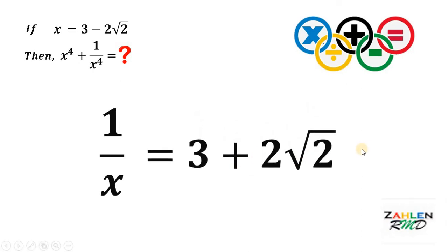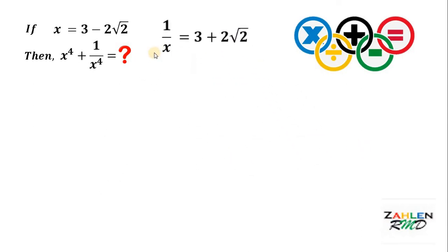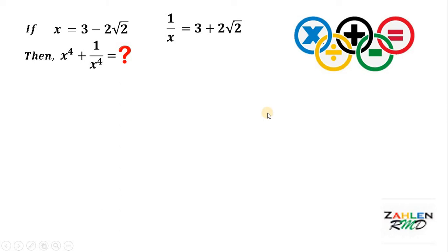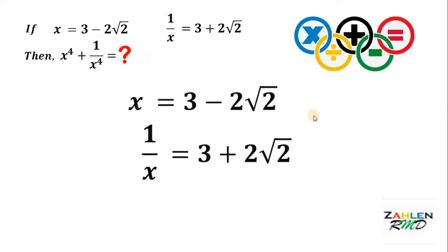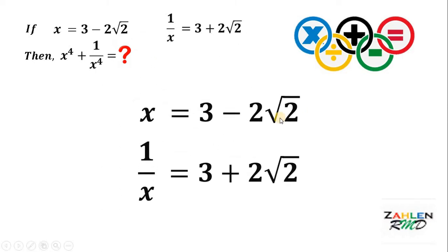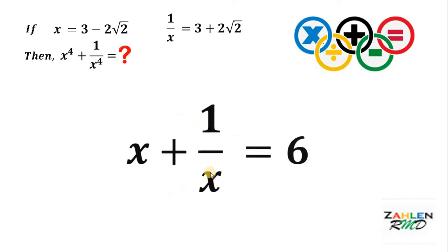So, 3 plus 2 square root of 2 divided by 1 gives us 3 plus 2 square root of 2. At this point, we have the value of 1 over x, which equals 3 plus 2 square root of 2. Now, what happens if we add x and 1 over x? Notice that negative 2 square root of 2 and positive 2 square root of 2 cancel out. Therefore, x plus 1 over x equals 6.